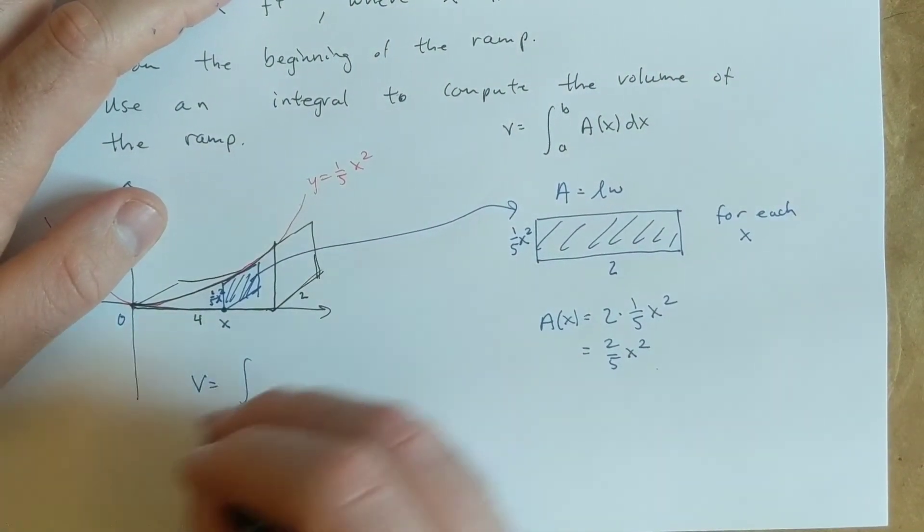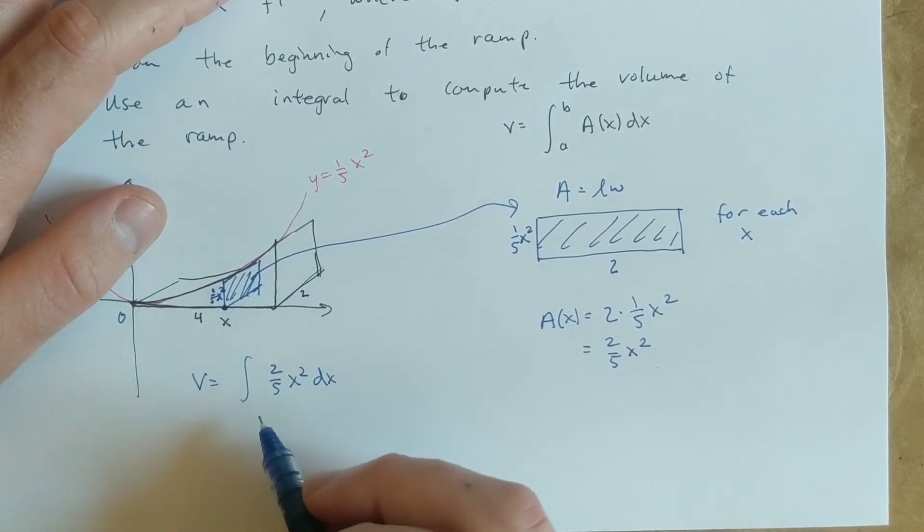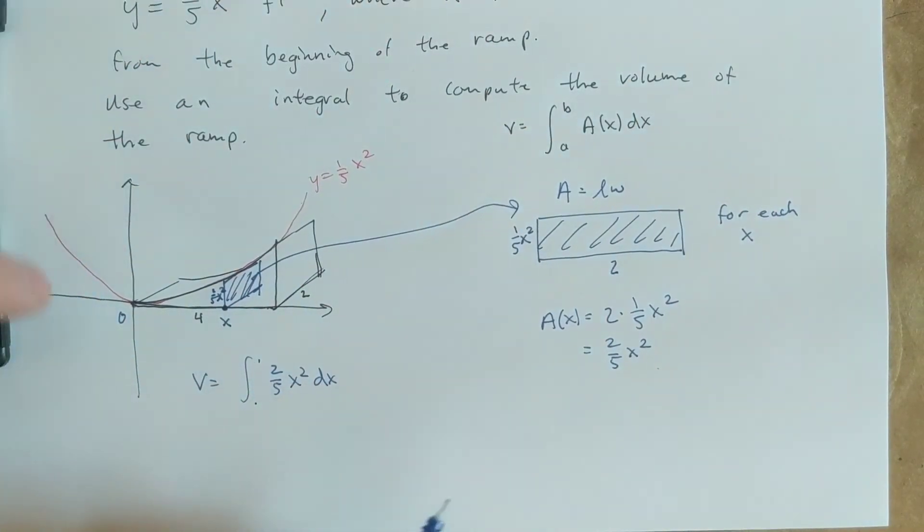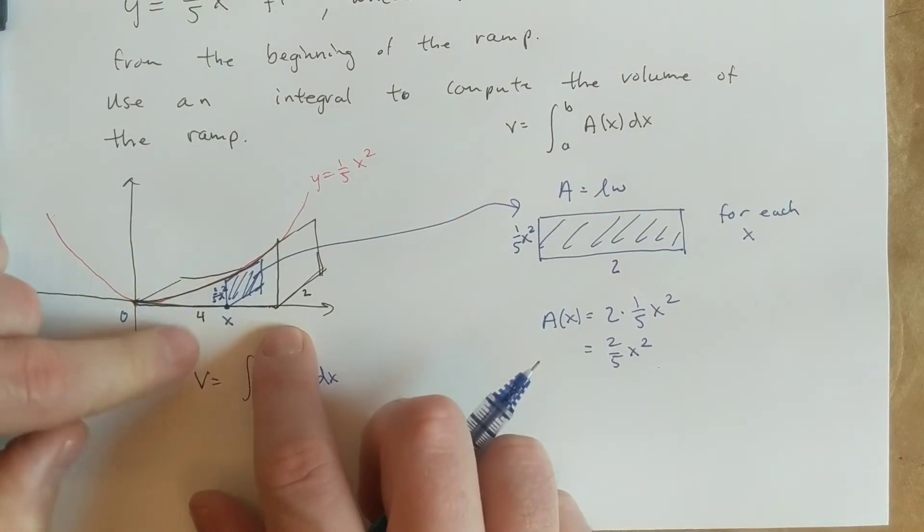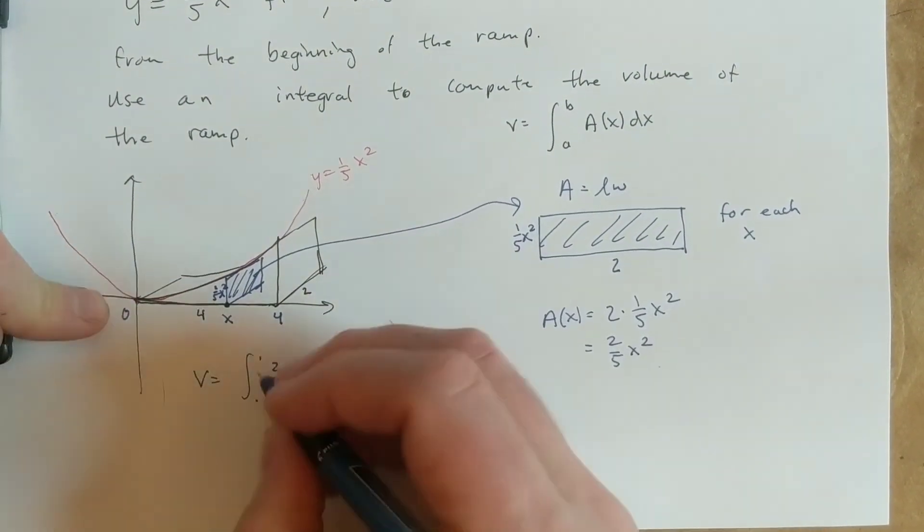So our volume is going to be the integral of two-fifths x squared dx. The only question is, what are our bounds? And we have it starting at zero, and where do we end? Well, we know we end at four, because it's four feet long.